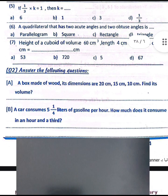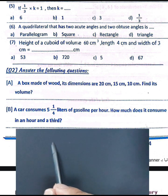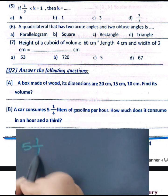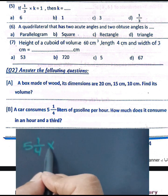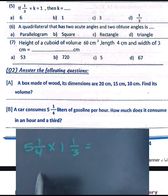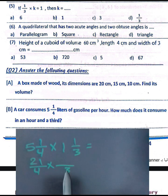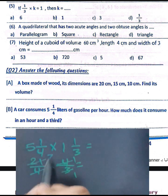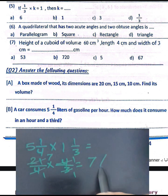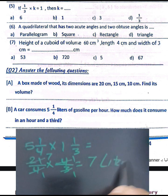Question letter B: a car consumes five and one quarter liters per hour. How much does it consume in one and one third hours? Multiply five and one quarter by one and one third. Convert: 5 and 1/4 becomes 21 over 4, and 1 and 1/3 becomes 4 over 3. Then simplify: 21 divided by 3 equals 7, and 4 divided by 4 equals 1. The result is 7 liters.